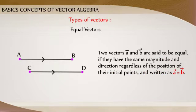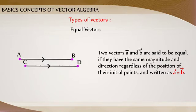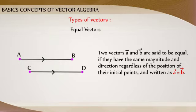Equal Vectors: Two vectors A and B are said to be equal if they have the same magnitude and direction regardless of the position of their initial points, and written as A vector equals B vector.